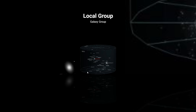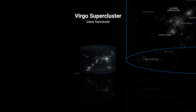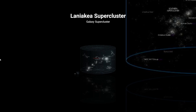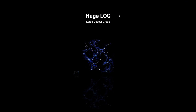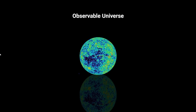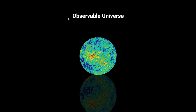Local Group — a galaxy group. This thing is way bigger than just the Milky Way. The Milky Way is just that one tiny little point there. Then the Large Quasar Group — a huge structure.